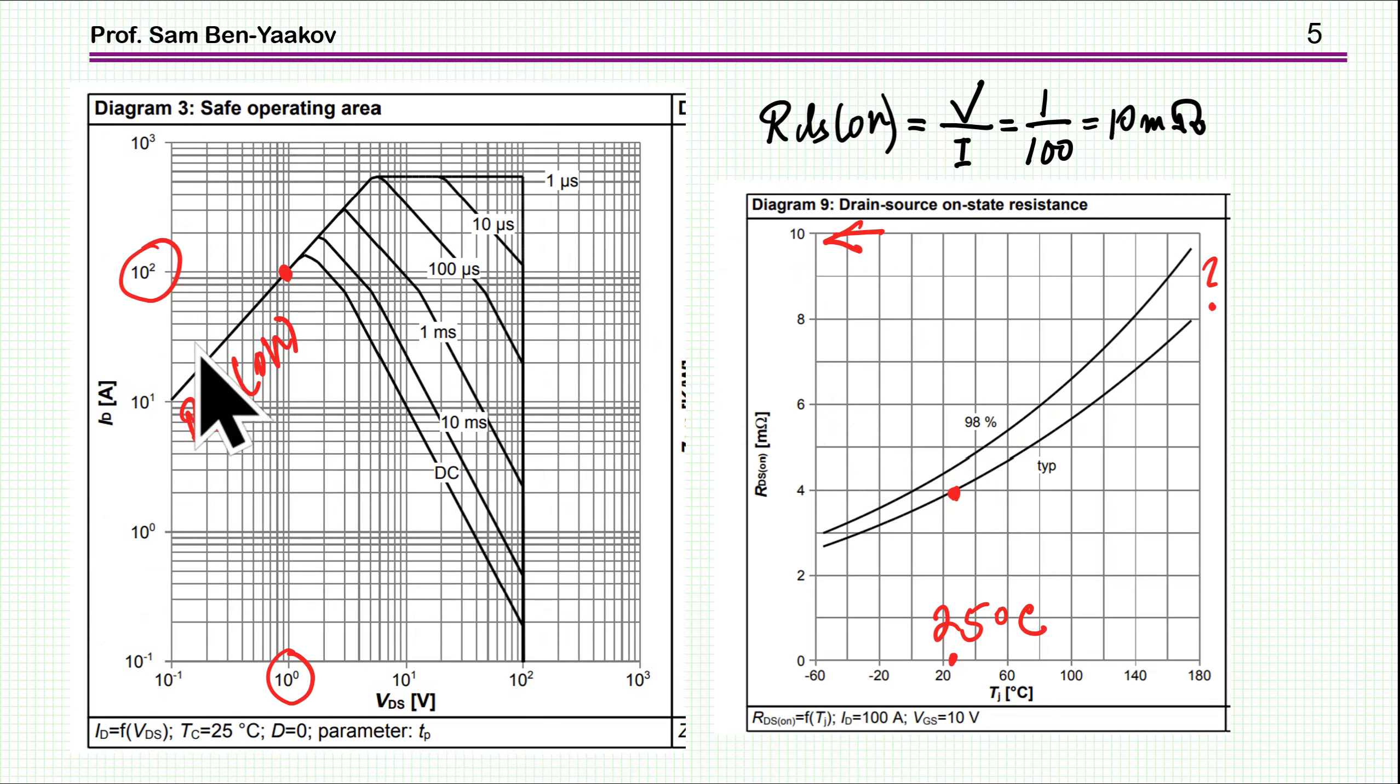Let's go back to this straight line showing RDS-on. From this line looking at this point, it's 100 amp and 1 volt. So the RDS-on is supposedly 10 milliohm. Now 10 milliohm is when the temperature is very high.